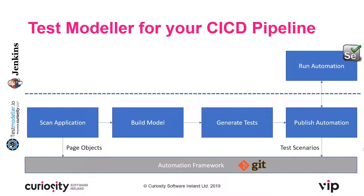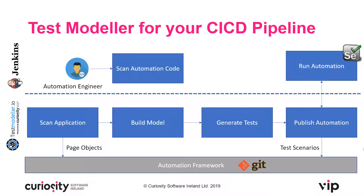As soon as any tests are published, they will be run through a Jenkins pipeline. In this case, we'll be running Selenium code. Whenever an automation engineer comes in and adjusts our framework or edits our page objects, we'll automatically be scanning the automation code and updating this code inside Test Modeler, where we can inspect the impacted changes and also update any models which have been impacted.